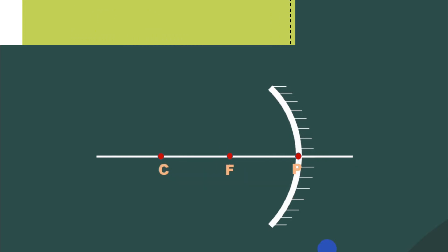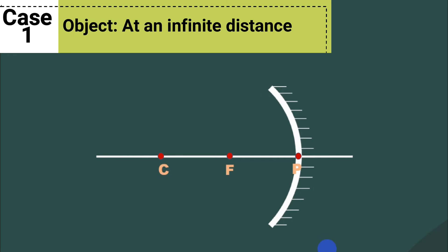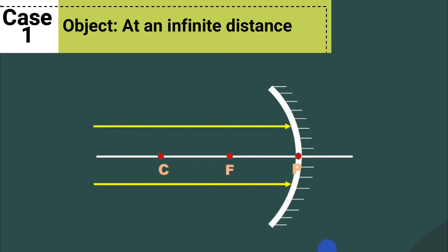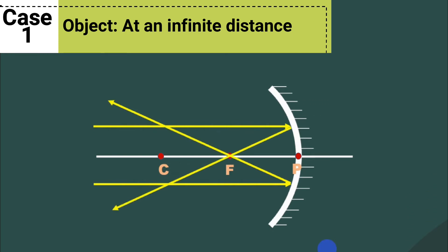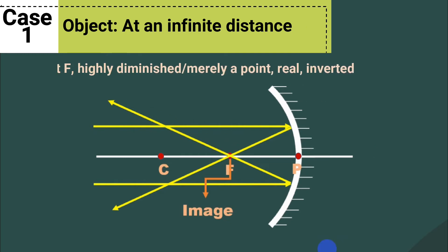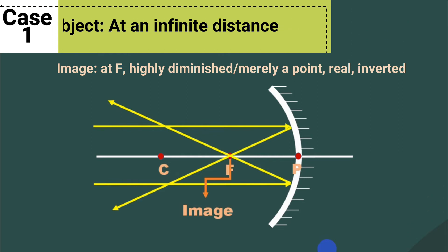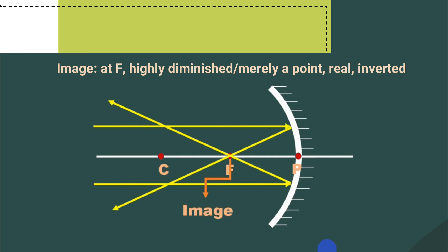For case 1, consider an object at an infinite distance. When the object is at infinity, the incident rays coming from the object are considered parallel to the principal axis and are reflected at the principal focus. The position of the image is the point where the light rays converge — in this case, at F and in front of the mirror. Therefore, when an object is at infinity, the image is formed at F, it is highly diminished or merely a point, and since it is formed in front of the mirror, the image is real and inverted.